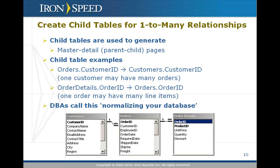Next, each individual order itself is comprised of one or more line item details — the individual components that you're ordering. So you'll want to put those order details in their own table, and there'll be a one-to-many relationship between the order table and the order details table. That's an example of a parent-child-grandchild relationship: one customer, many orders; one order, many line item details. DBAs refer to this as normalizing your database.